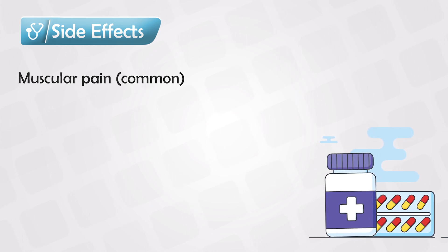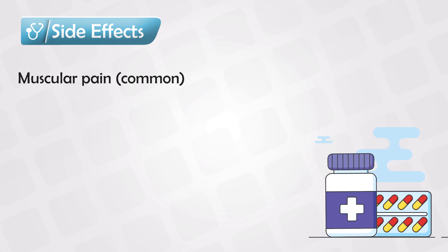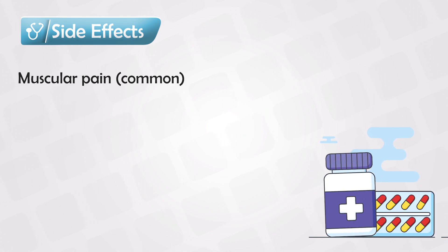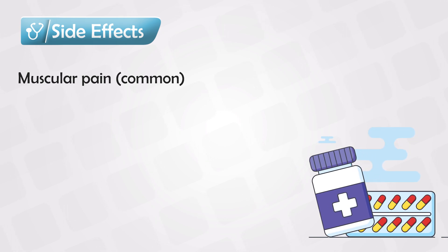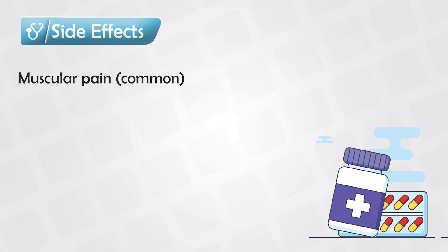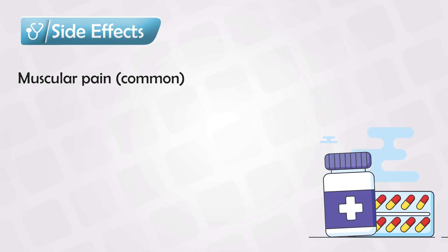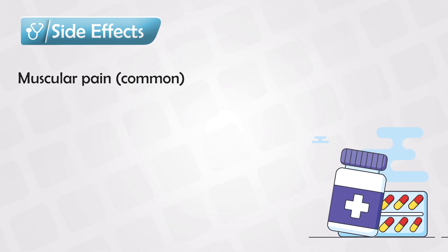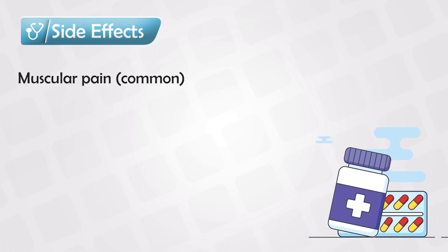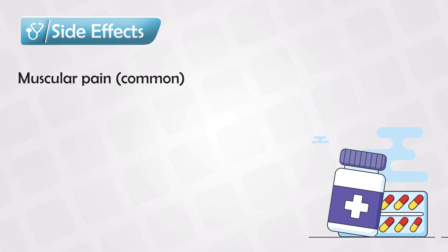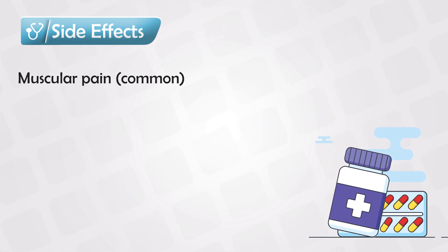For statins, the side effects include muscle effects, and this affects up to half the patients who use statins. Statin medications affect the muscles in the body, especially the proximal ones — in the arms and thighs. It can also affect the muscles in the shoulders and hips. The patient will complain of swelling of these muscles, as well as muscle pain, tenderness, and sometimes weakness.